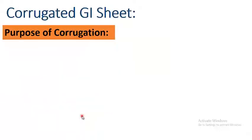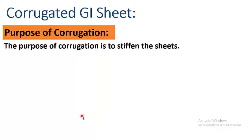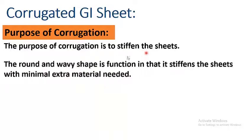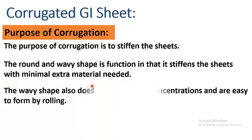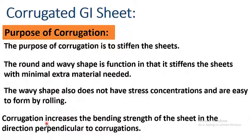Now, what is the purpose of corrugation? The purpose of corrugation is to stiffen the sheets. The round and wavy shape is a function in that it stiffens the sheets with minimal extra material needed. The wavy shape also does not have stress concentrations and is easy to form by rolling. Corrugation increases the bending strength of the sheet in the direction perpendicular to the corrugations.